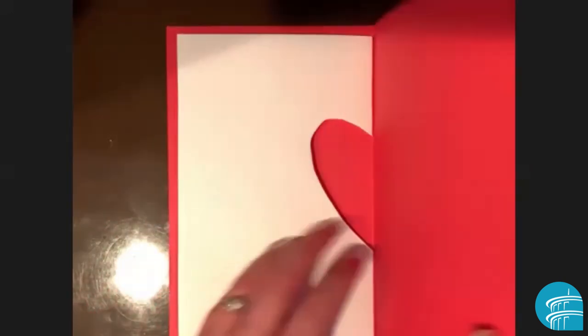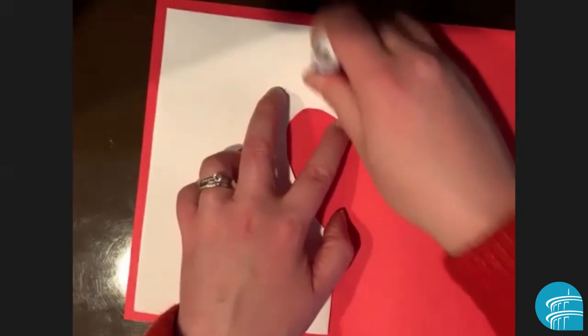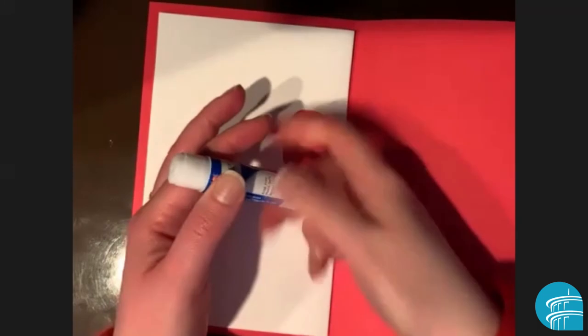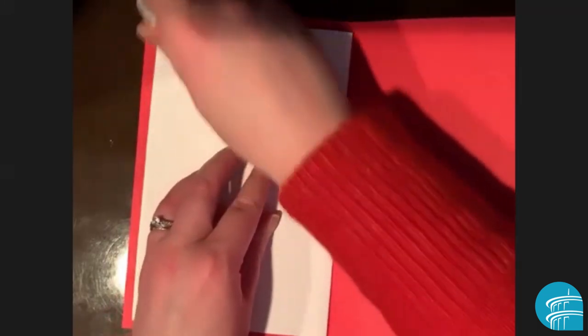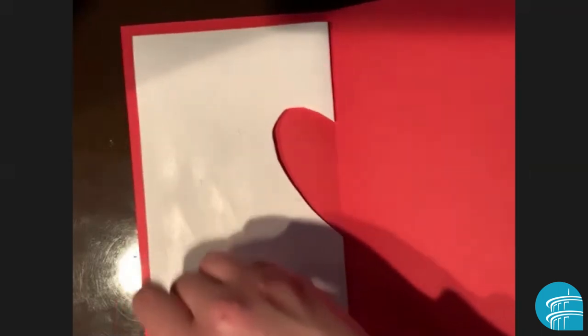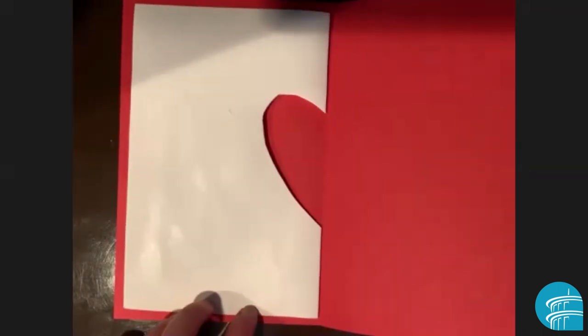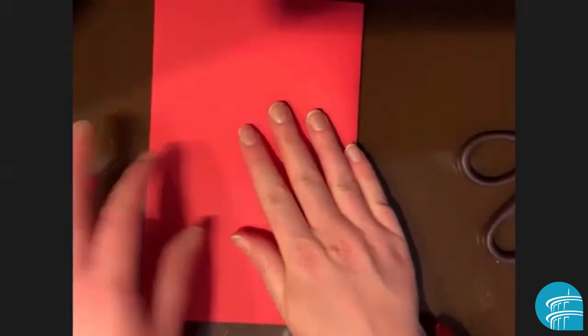I'm going to flip over to the other side. Take our glue stick again. Put glue all over that side of the white piece of paper. And then we're going to fold that over and press again.